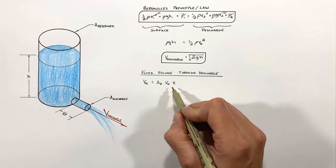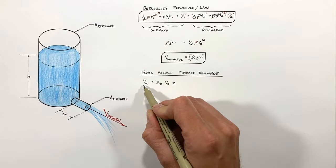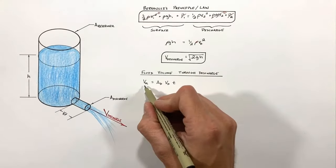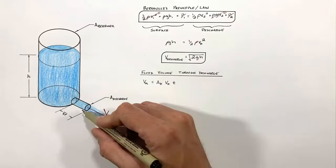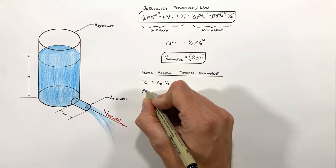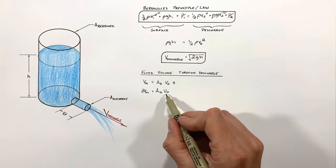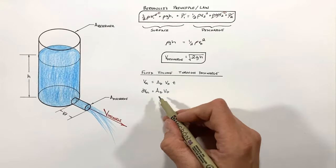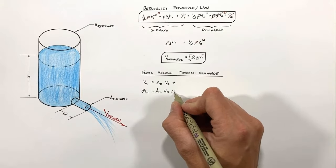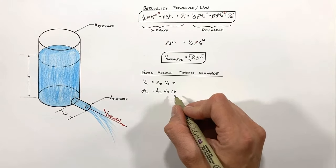So what we're going to do is use calculus to express this equation over an infinitely small amount of time. Rather than having some large volume of fluid come out of this discharge, we're going to talk about an infinitely small amount of fluid which comes out of the discharge — we'll call it dV, an infinitely small change in volume. Our cross-sectional area and the velocity at the discharge are constants, at least in an instant, but it's this time which we're going to make infinitely short, so I'm going to call this dt — an infinitely small change in time.